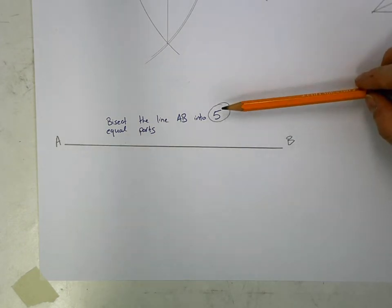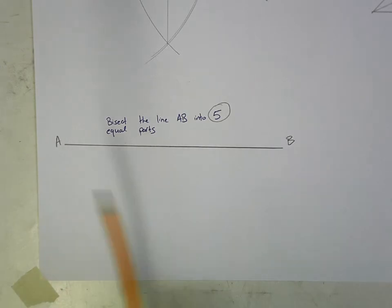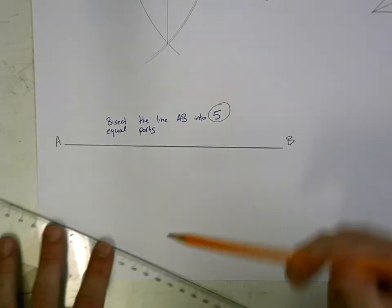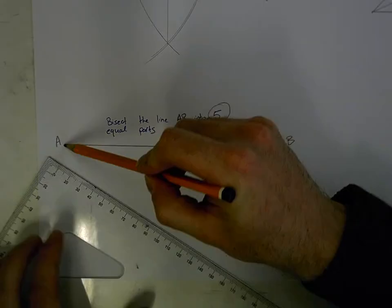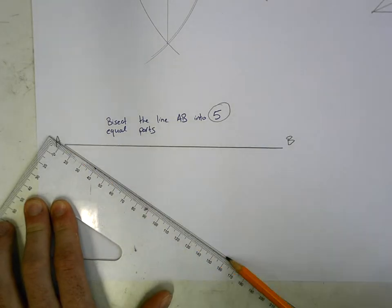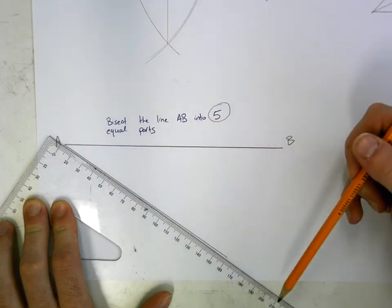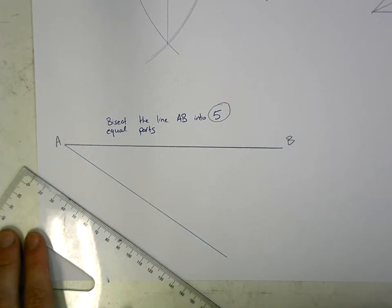So what we're going to do first of all is we're going to go to one end of our line. It doesn't matter, we have A and B at both ends. We're going to go to one end. I'm going to go to A. And what I'm going to do is I'm going to draw an angle line away from A. It doesn't matter what angle it's at, and it doesn't matter what length it is. Just draw the line.